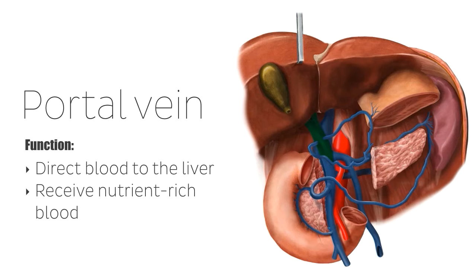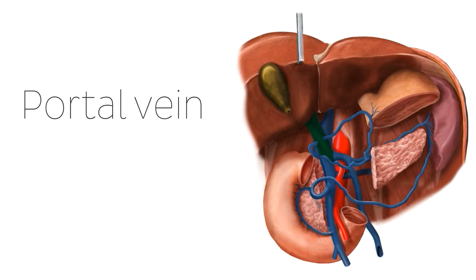The portal hepatic vein also receives blood from the spleen, the pancreas, and the gallbladder, which it channels within the vessel to the liver. Once inside the liver, this blood can be filtered and processed, while also being cleansed of bacteria and toxins, in a process called detoxification.